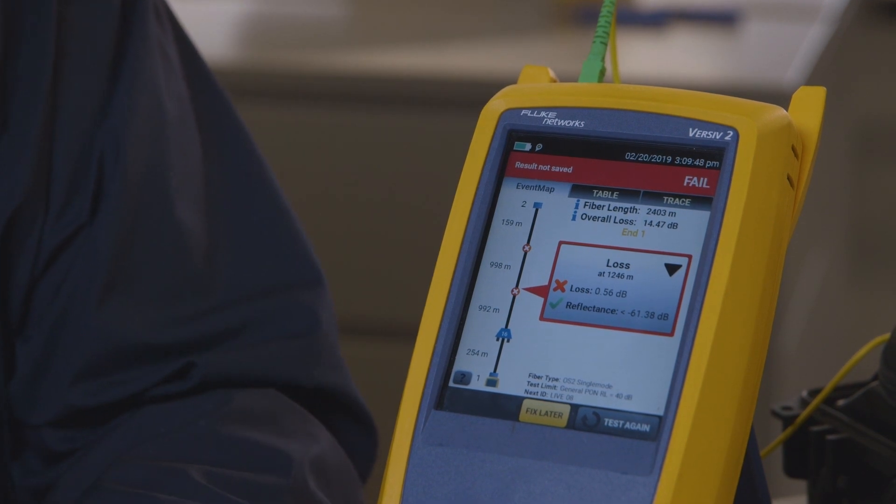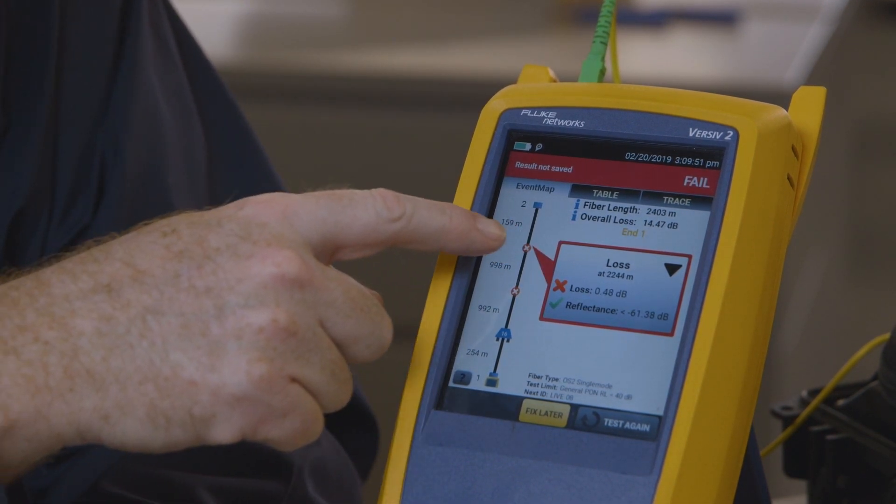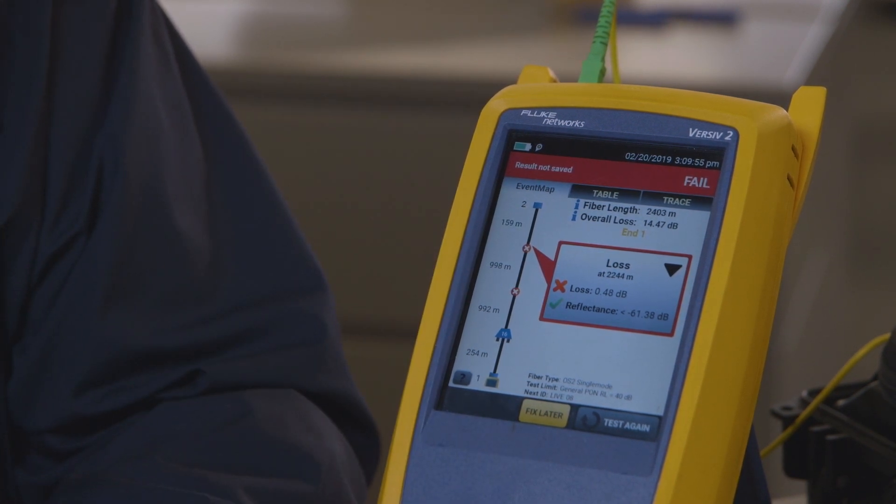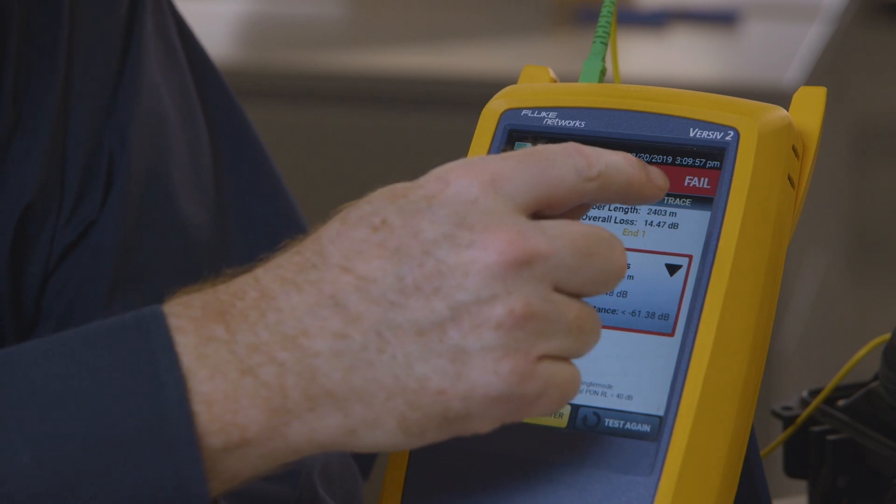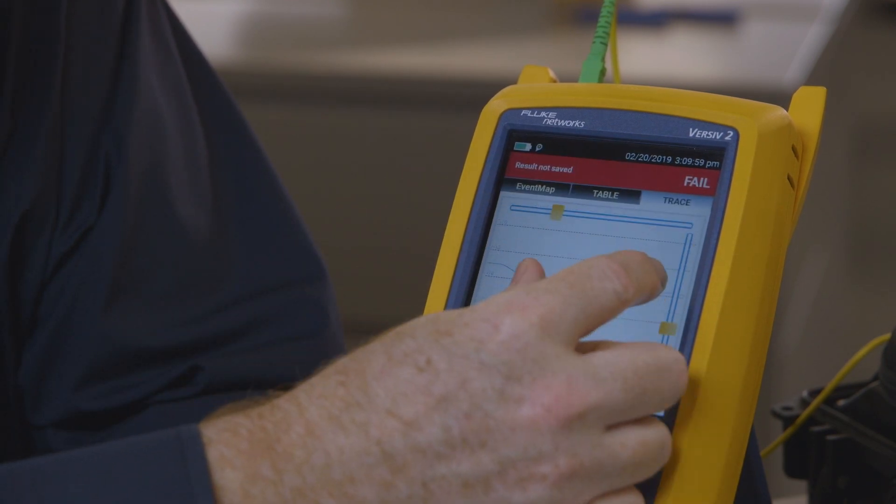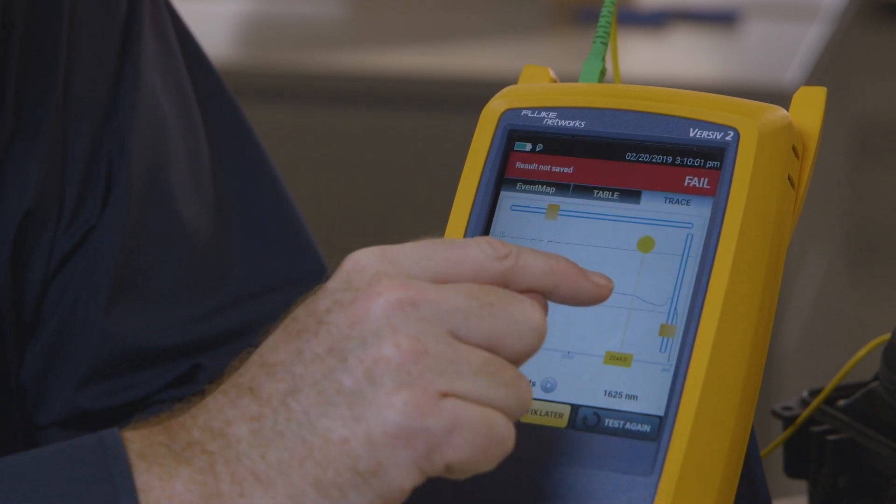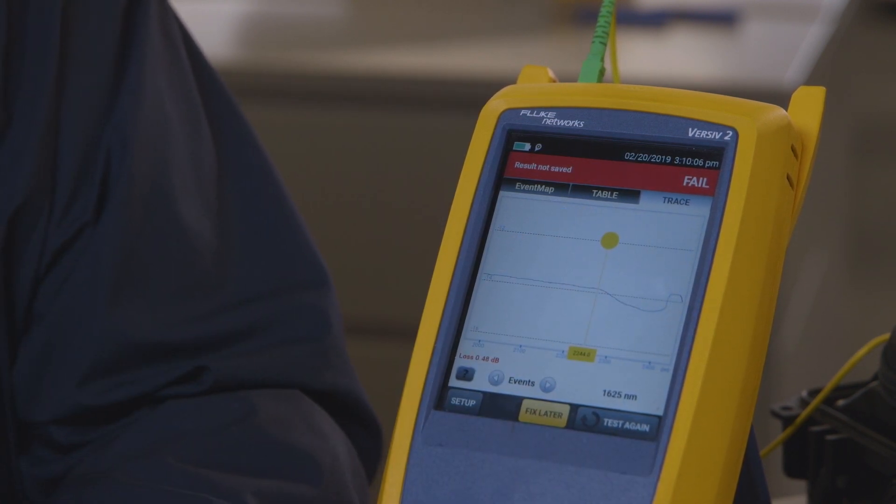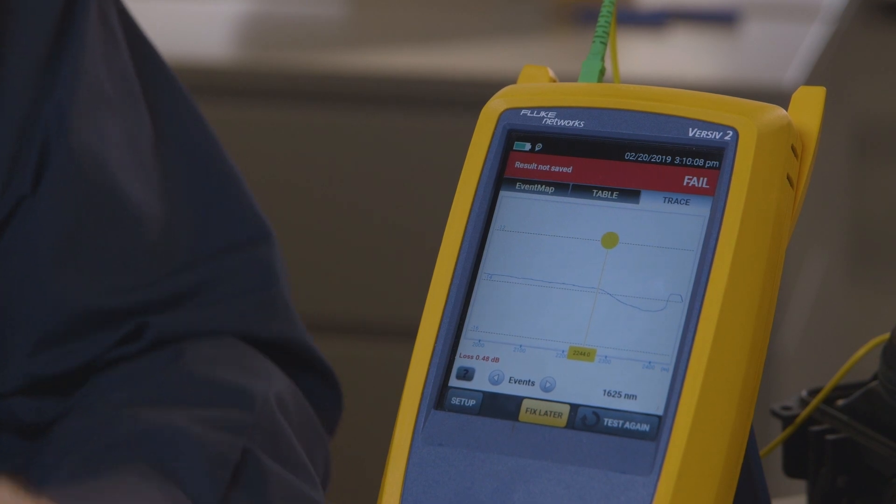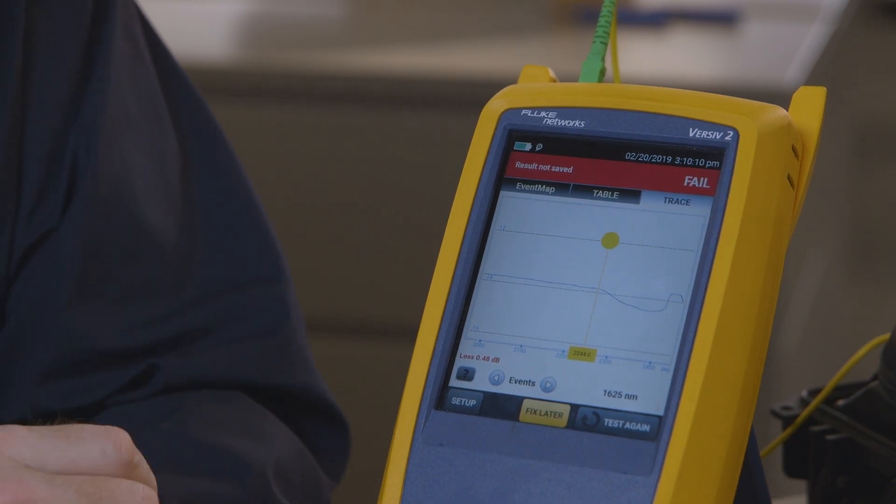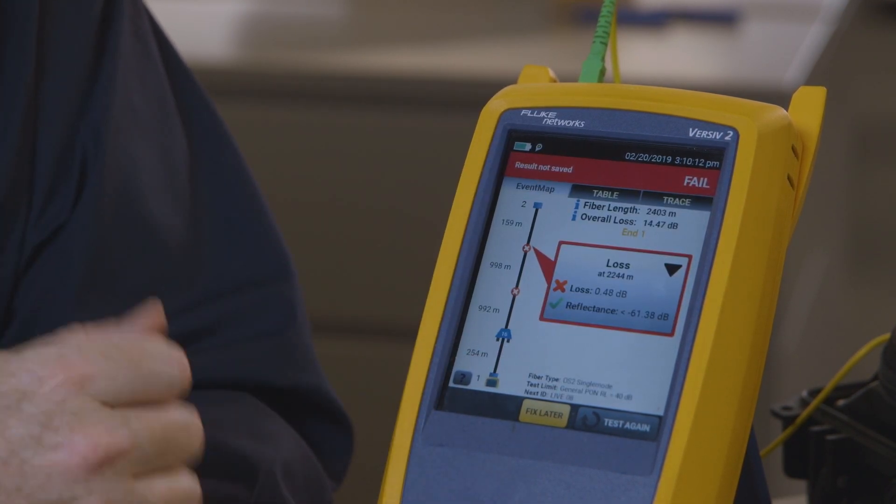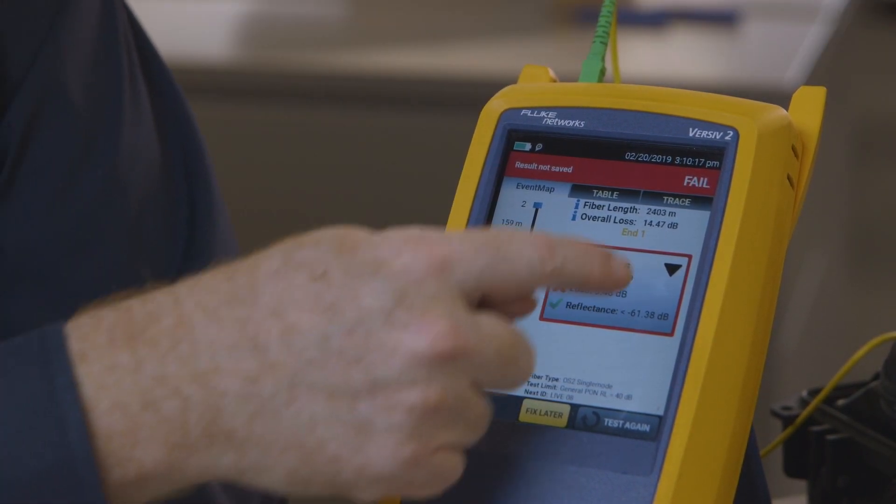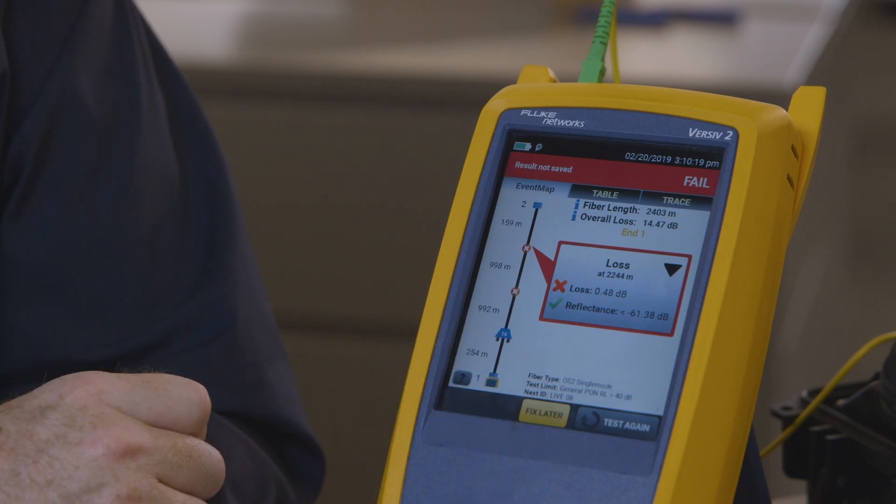I can see here this circle on our event map applies to loss events and if we look at the trace we'll see that this does look just like a loss event and the OTDR can't tell the difference between a fusion splice or mechanical splice and an APC connector. But I know that's an APC connector. I can see it on my demo box here. So I don't want to have a red X and a failing value.